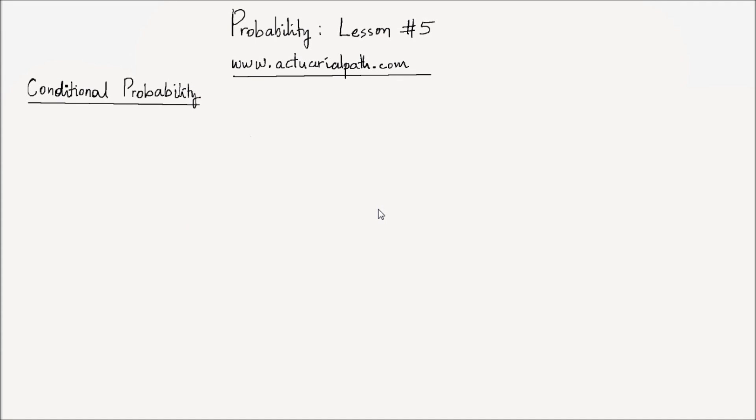Hi, everyone. This is lesson number 5 on probability from Actuarial Path. In this lesson, we will study conditional probability.